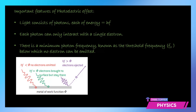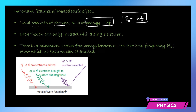As we learned, photoelectric effect is the phenomenon of emission of electrons when light falls on a metal surface. We need to understand that light consists of photons and each photon carries an energy Hf. This is the energy of each photon that falls on the surface — the incident energy. Each photon can only interact with a single electron, so one photon striking a metal surface will be able to eject one electron.